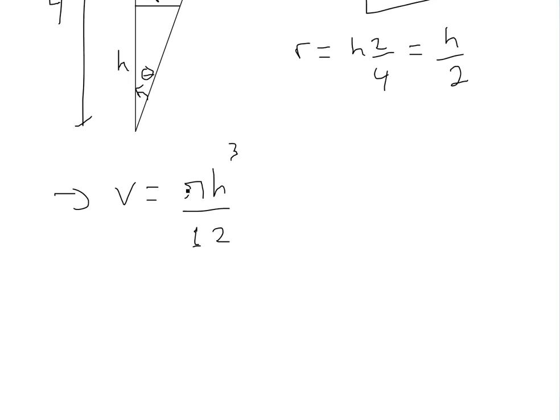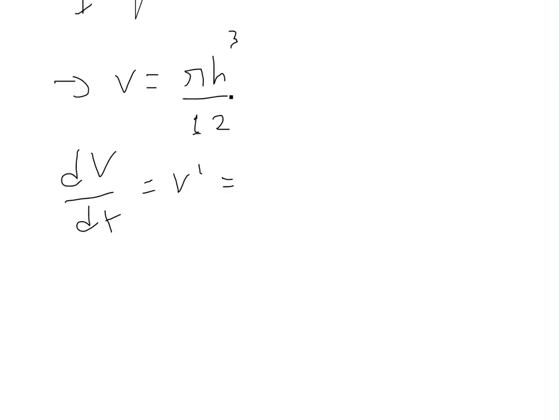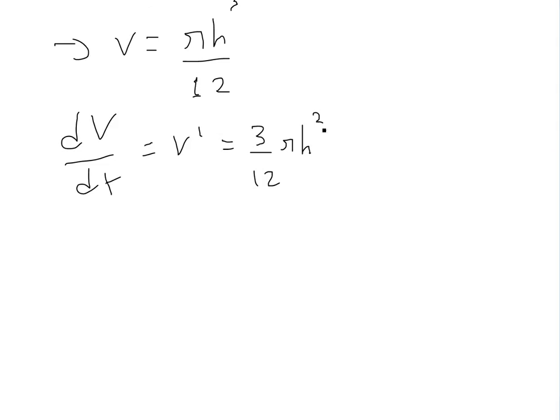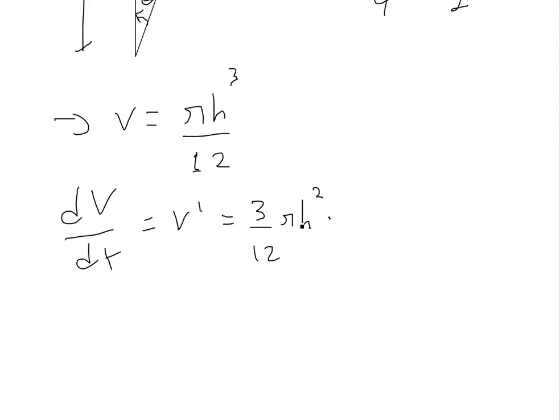Now what we could do is take the derivative and using chain rule, because both h is a function of t and V is a function of t. So we take derivative on both sides. dV/dt. This equals to, well, V prime equals to now using derivative of h³. That is bringing down using power rules. 3 over 12 here. π h² minus one.